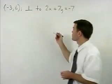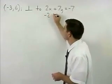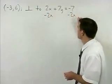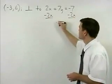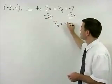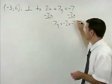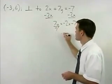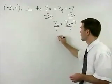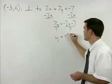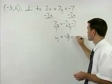To do that we first subtract 2x from both sides to get 7y = -2x - 7. Divide both sides by 7 and y = -2/7x - 1.